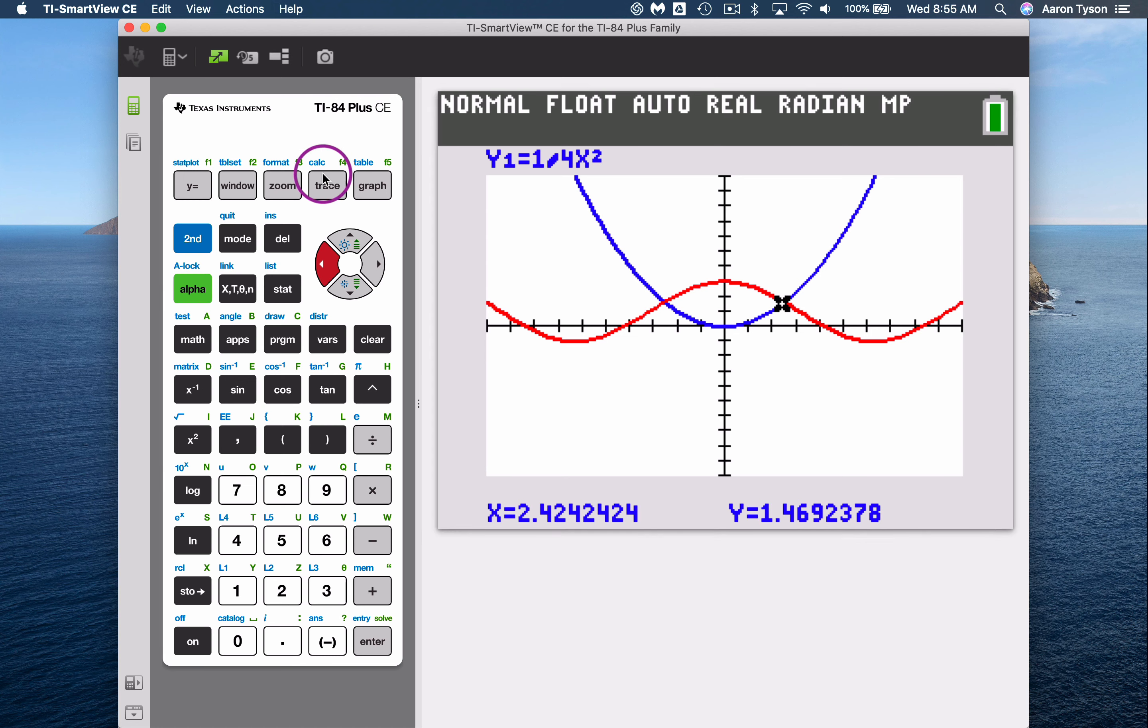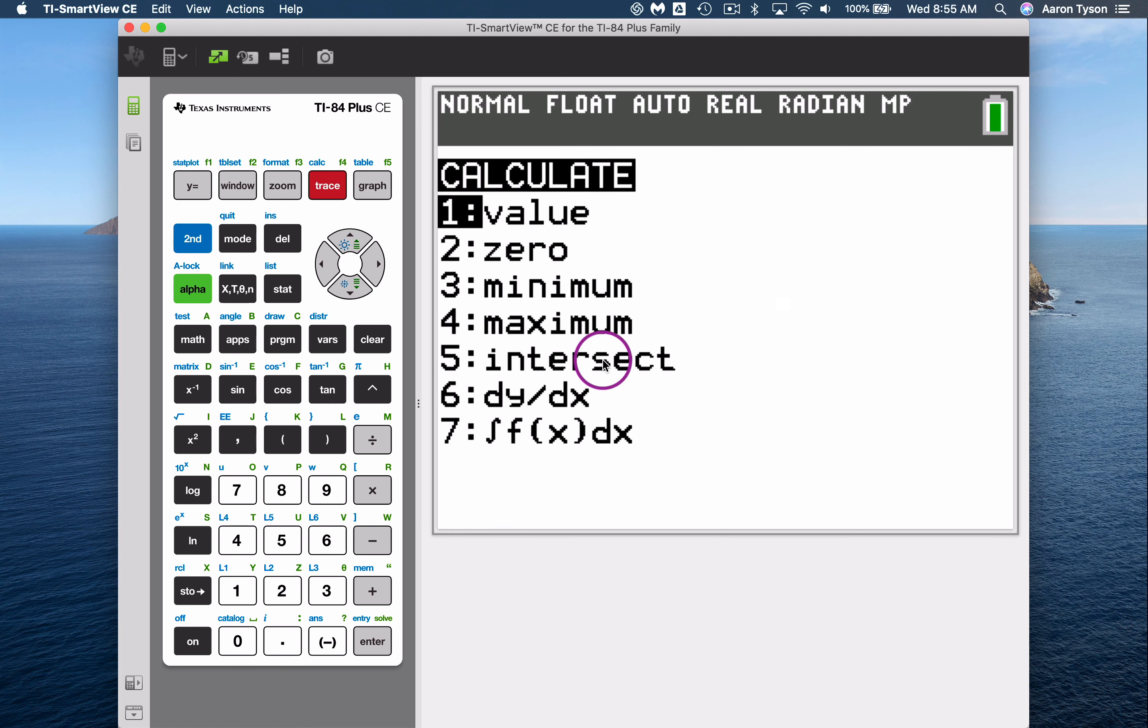So to do that, you're going to get into the calculate menu by doing second and then hitting trace. And we're going to choose option five. This is going to calculate a point of intersection.